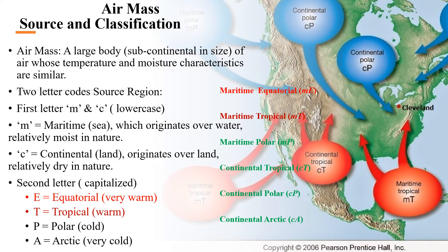We have five types of air masses that directly affect United States weather. Those are maritime tropical (MT), maritime polar (MP), and continental tropical (CT).